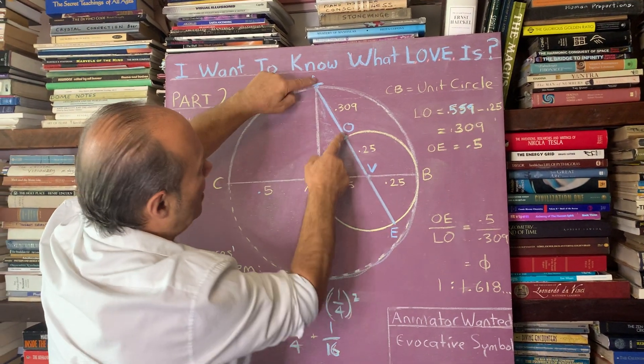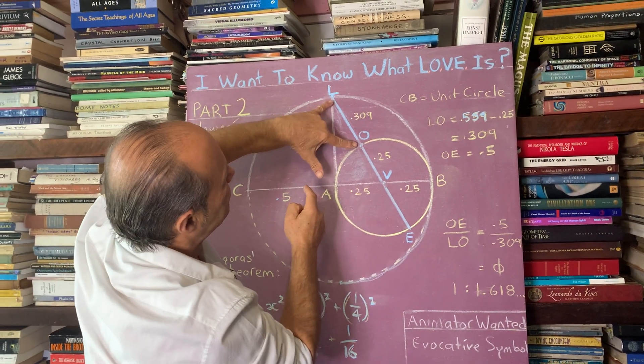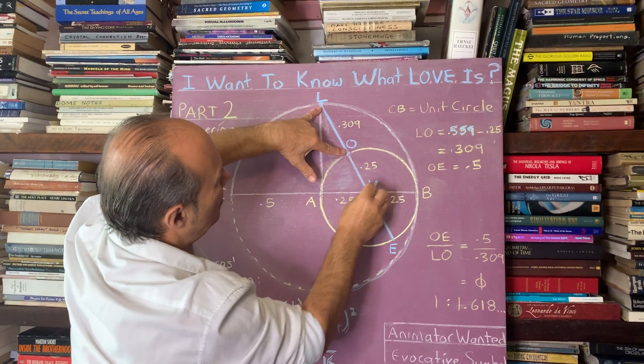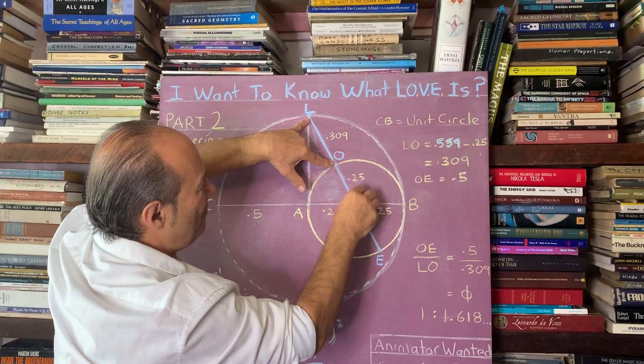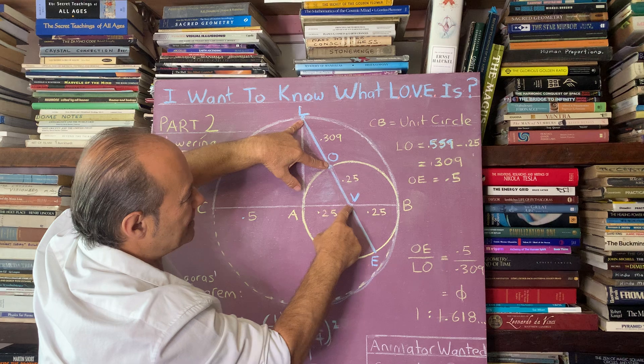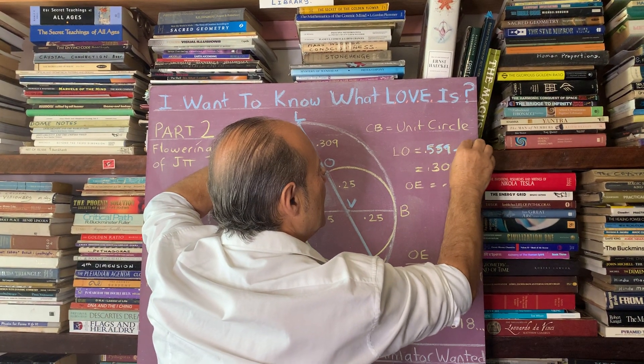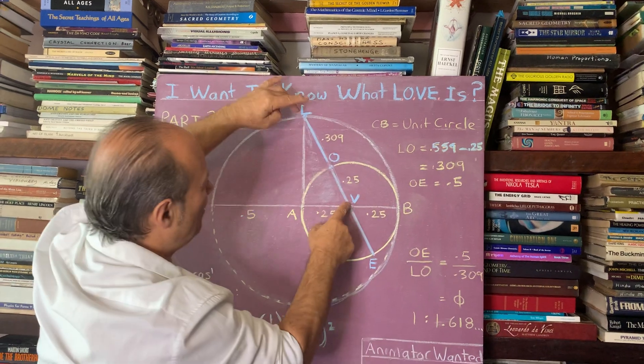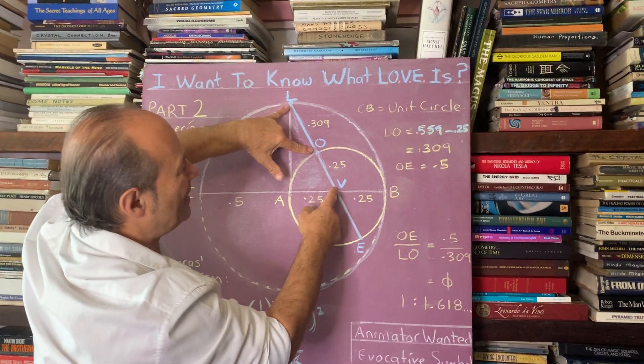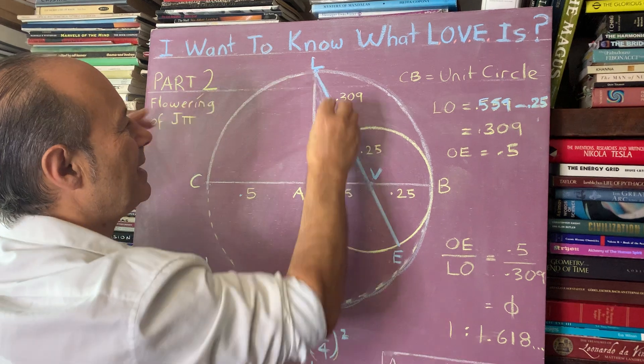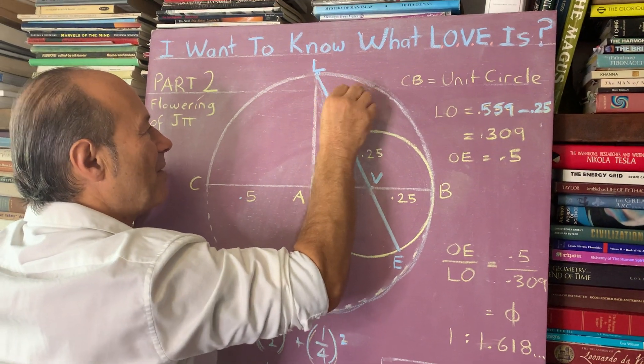So let's take a note, 0.559. So now I know that the distance from L to V is 0.559. But we need to know this distance here. So we know that this distance here, O-V, is a quarter, because that's the radius of the small circle. So if you take away 0.25 from the 0.559, we've calculated that this distance here is 0.309.